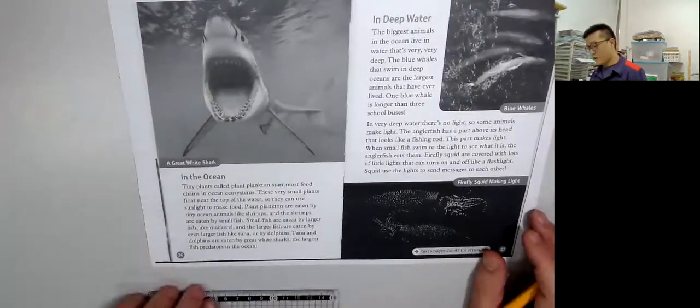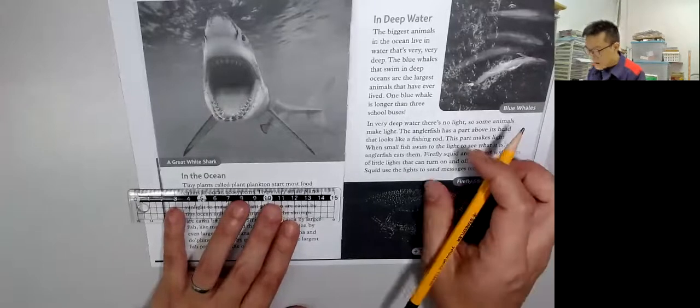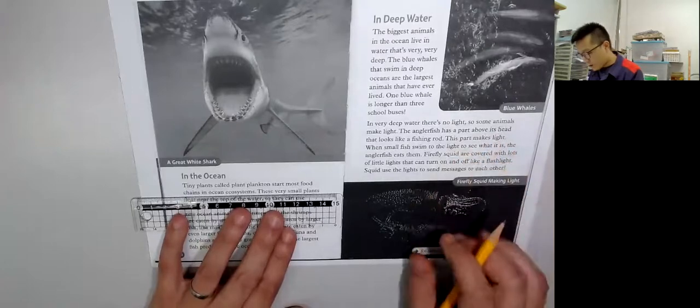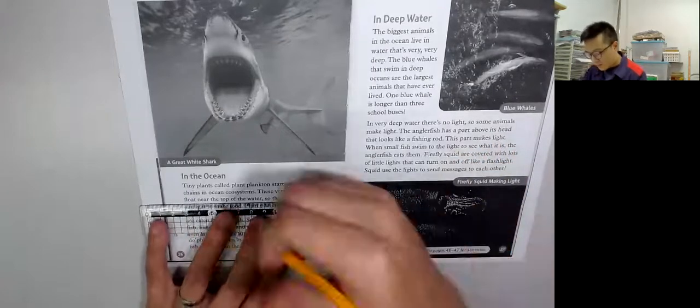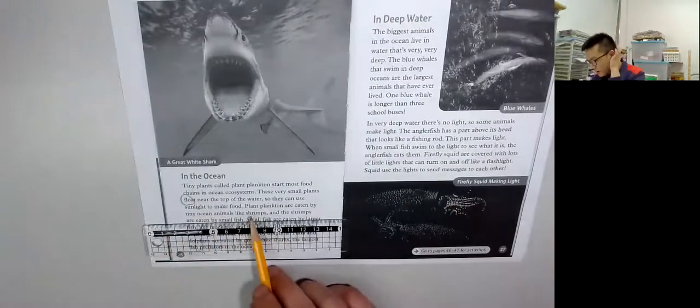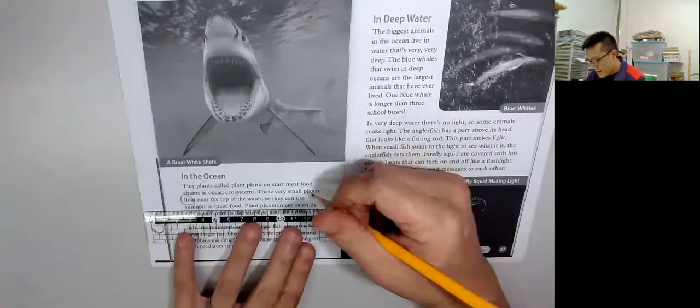In the ocean, tiny plants called plankton start most food chains in ocean ecosystems. These very small plants float near the top of the water so they can use sunlight to make food.